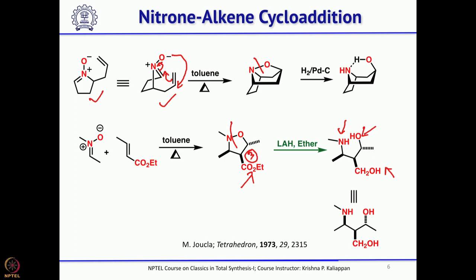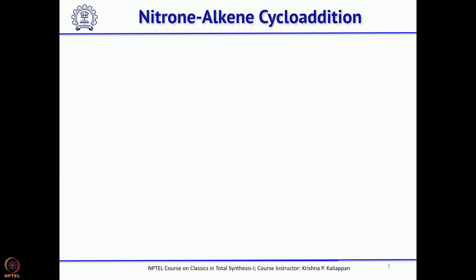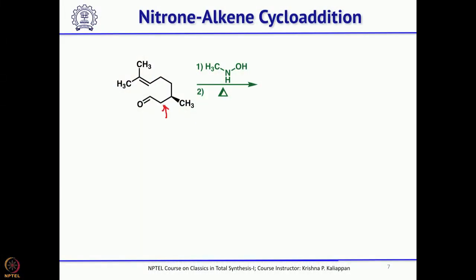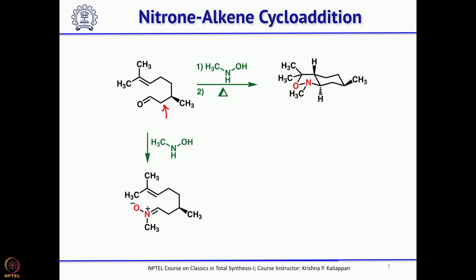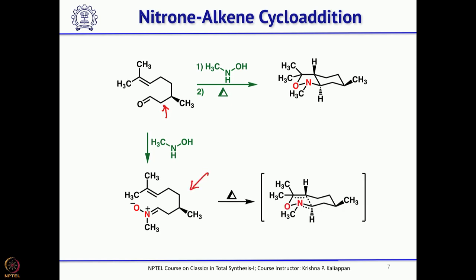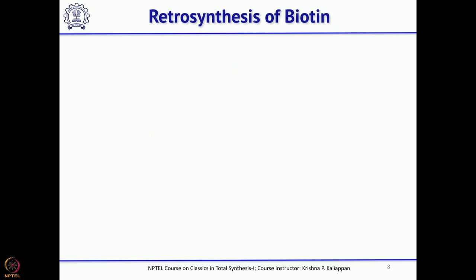I will also show another example of intramolecular nitrone-alkene cycloaddition, because this is important to understand the 1,3-dipolar cycloaddition which is involved in the synthesis of biotin as the key step. The starting material is citronellol, commercially available. Treatment with methyl hydroxylamine forms a nitrone, and the nitrone undergoes 1,3-dipolar cycloaddition through a chair-like transition state, followed by formation of the 5-membered ring. Again, cleaving with zinc will give the corresponding amino alcohol. Now let us see how biotin was synthesized — what was the retrosynthesis by the Roche group.